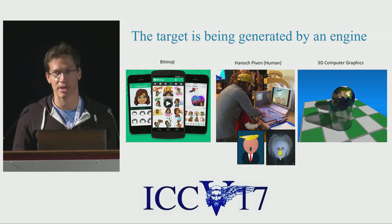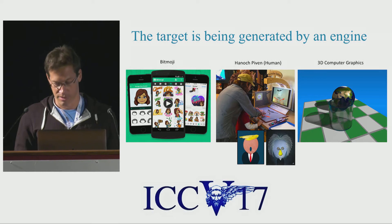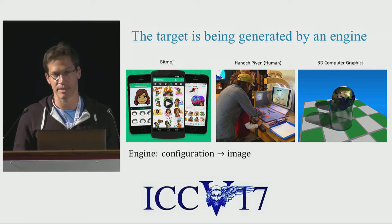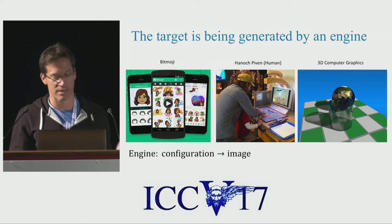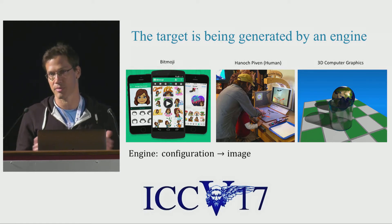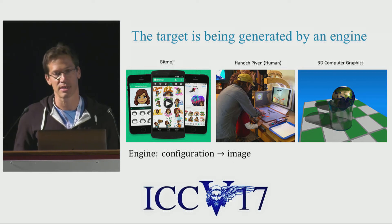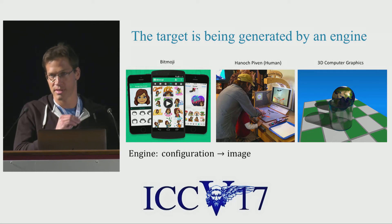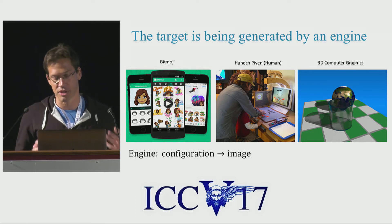In this work, we note that the images we aim to replicate are generated by an engine. An engine is a mapping between a configuration vector and an image. This is very common — for example, in Bitmoji images, you select the type of hair, the shape of the eyes, the shape of the nose, and so on to compose an image. There is a vector of parameters, all these little switches you have to select, and the image is generated.